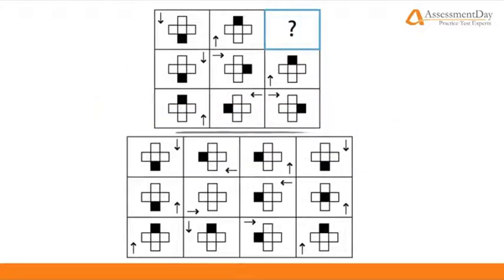We are given nine boxes, each containing an abstract visual, which together, typically by rows or columns, make patterns or variations that we can induce. One box, in this case the one in the top right, is unknown. Once we have established a pattern, we can find the answer which will be one of the twelve answer options given.